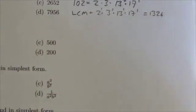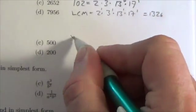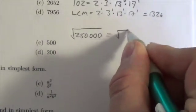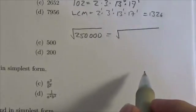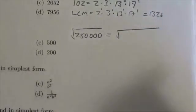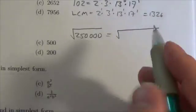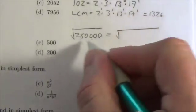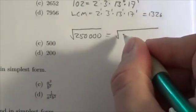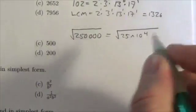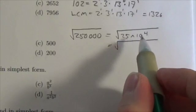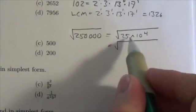Let's take a look over at the side here. We're gonna take a look at the square root of 250,000, and what I want to do, as I've done a few times with this, I want to write this in terms of its prime factors. 250,000 is gonna be 25 times 10 to the 4, so that's 10 to the 4 and 25 here.